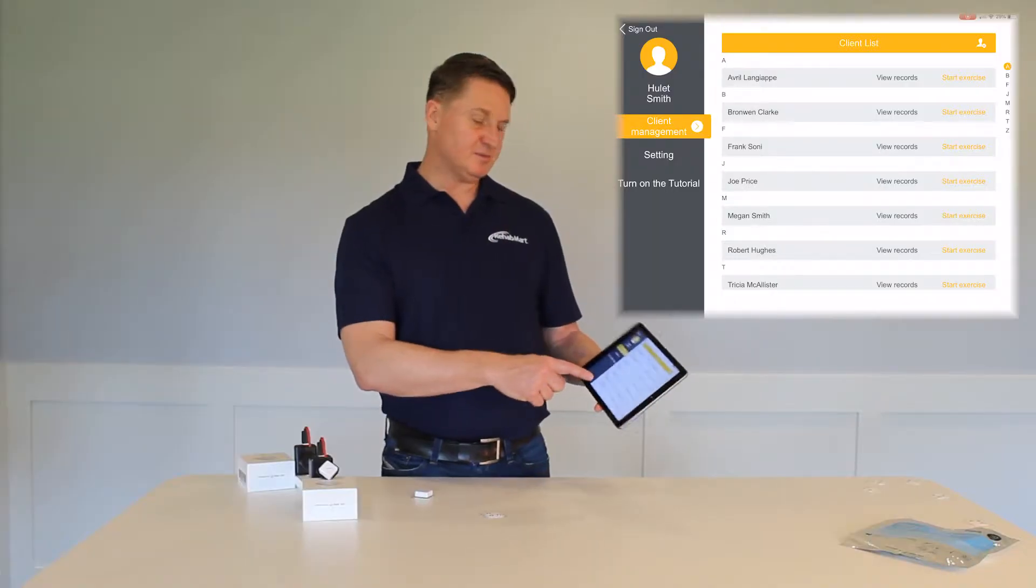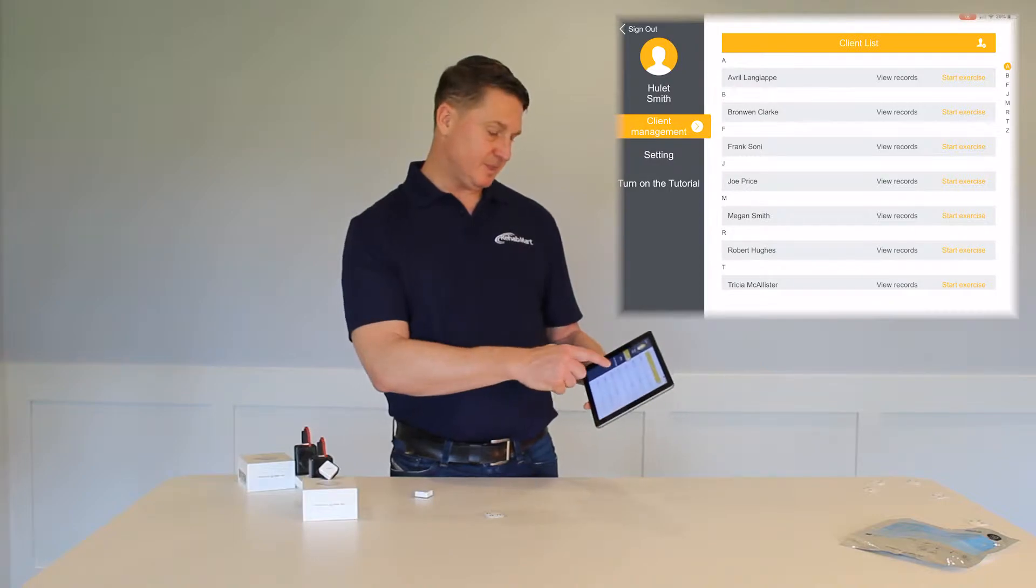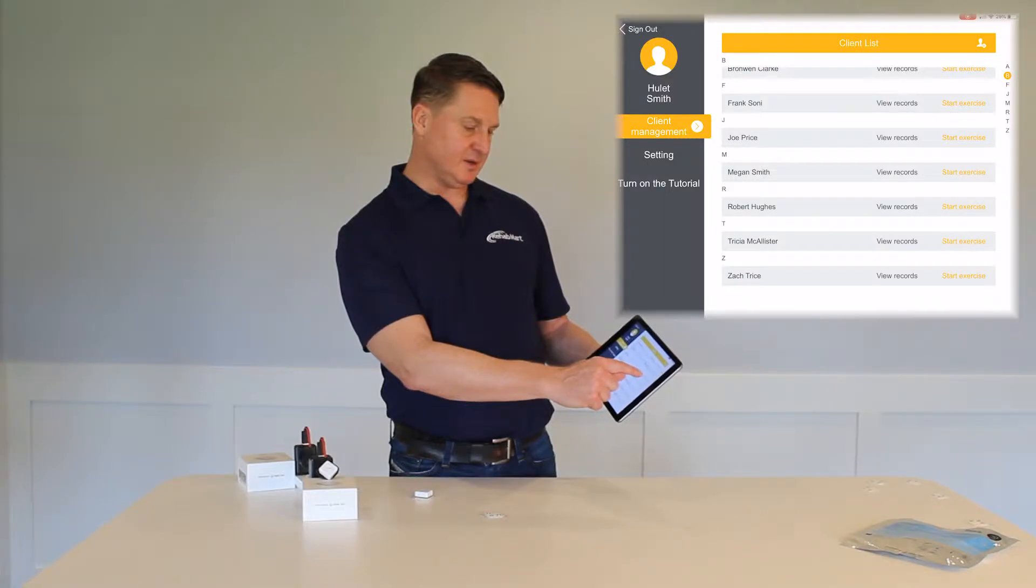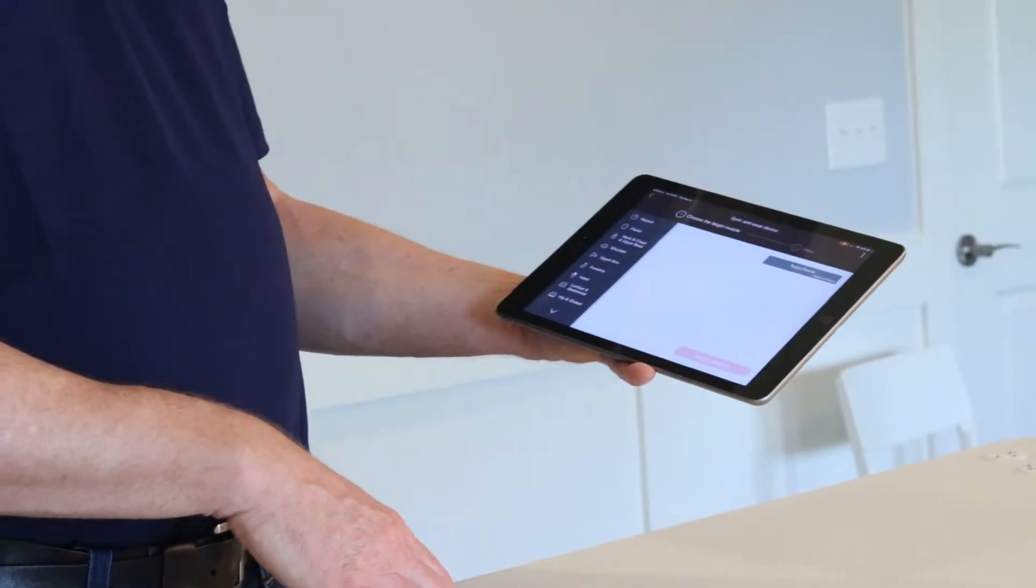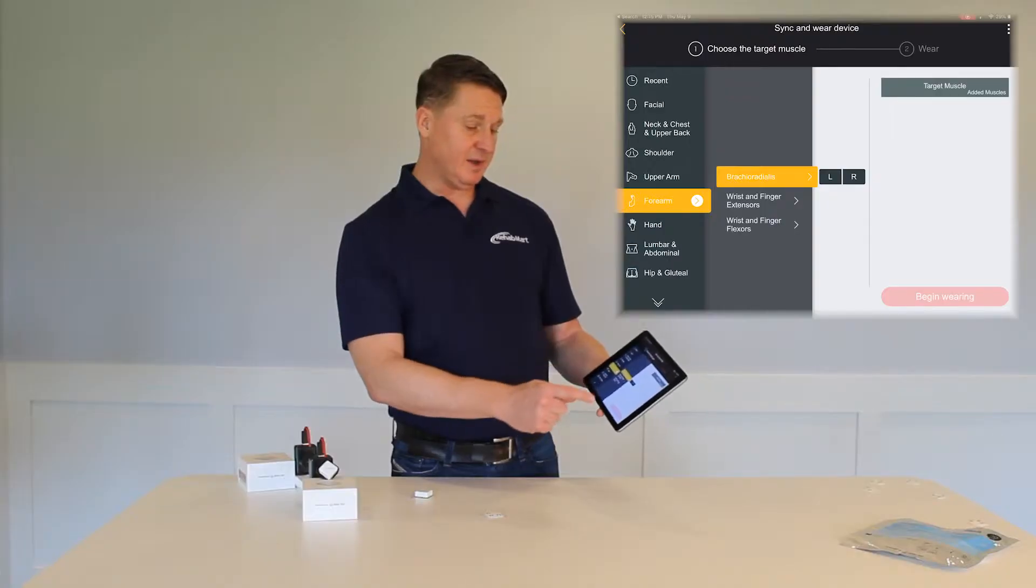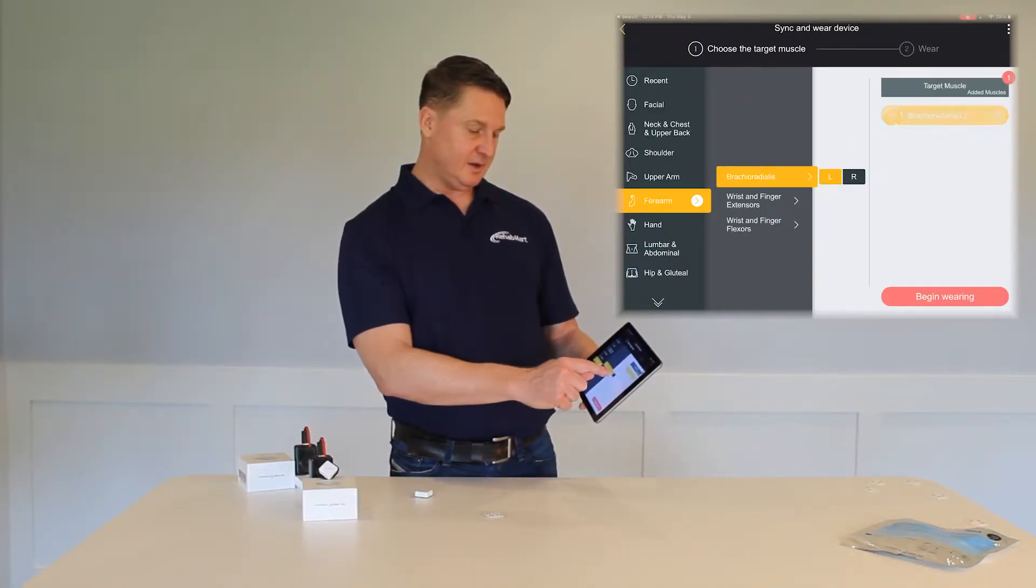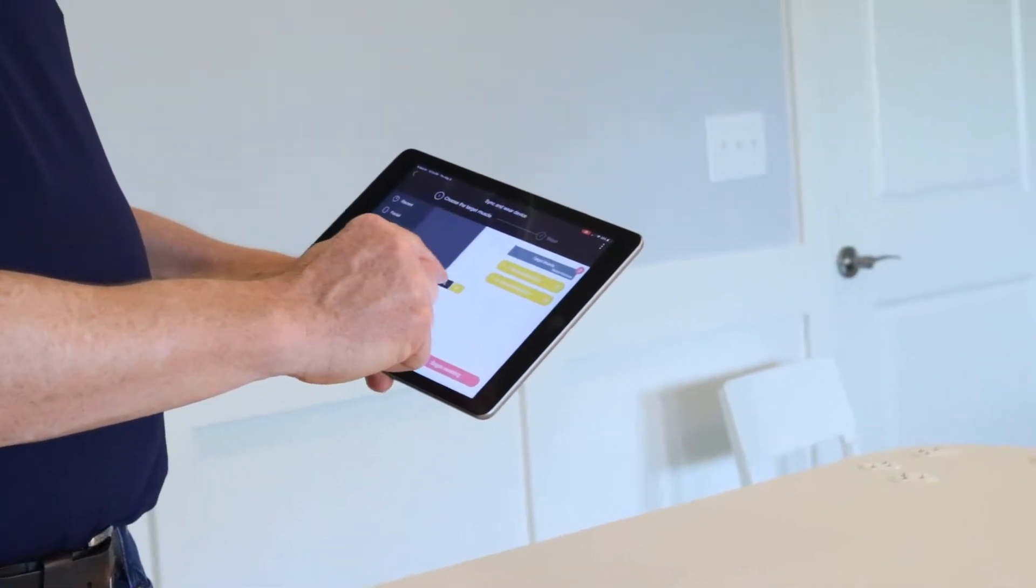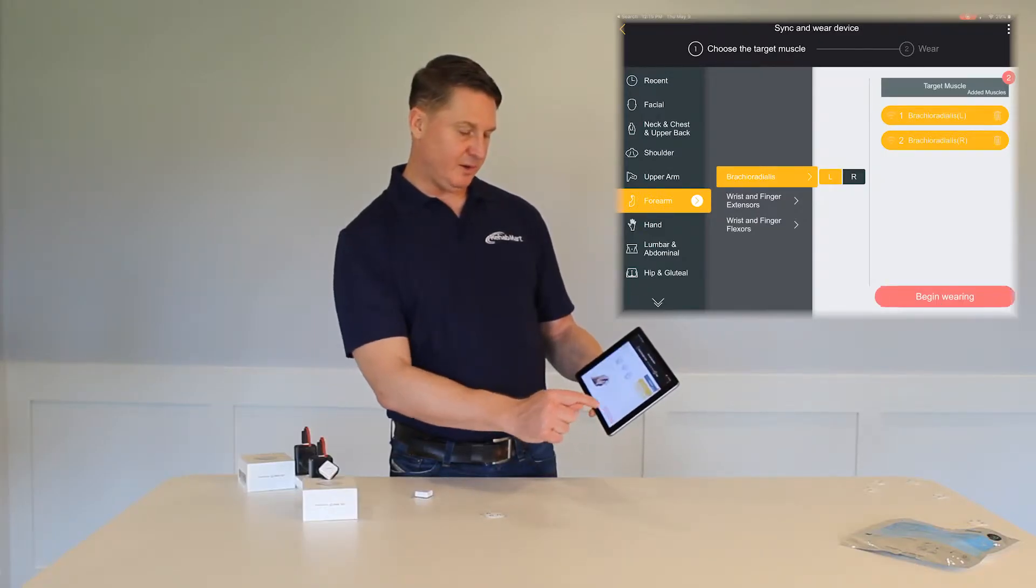For this section, I'm just going to pick a sample patient, Joe Price. This is a made-up patient. We're going to go beside Joe's name and click start exercise. I'm going to go down to forearm and choose brachioradialis. I'm going to choose left and right, and then activate left and click begin wearing.